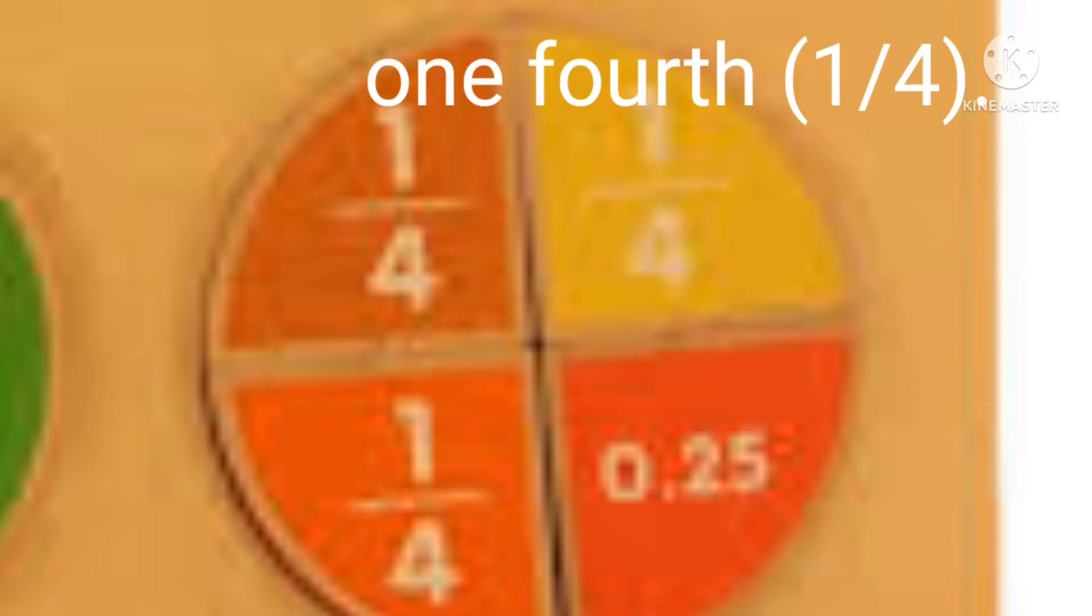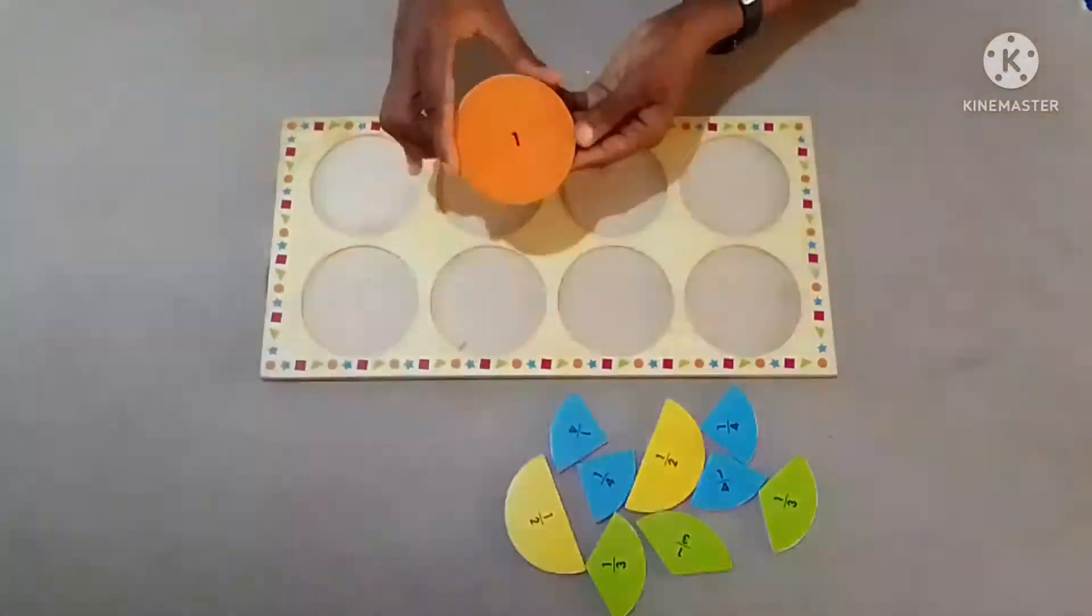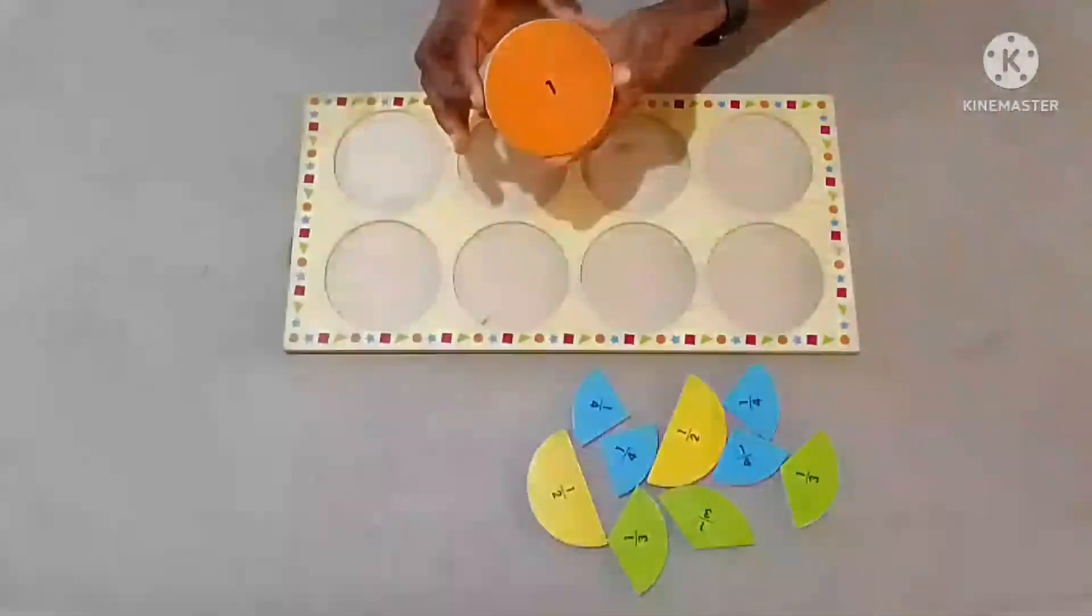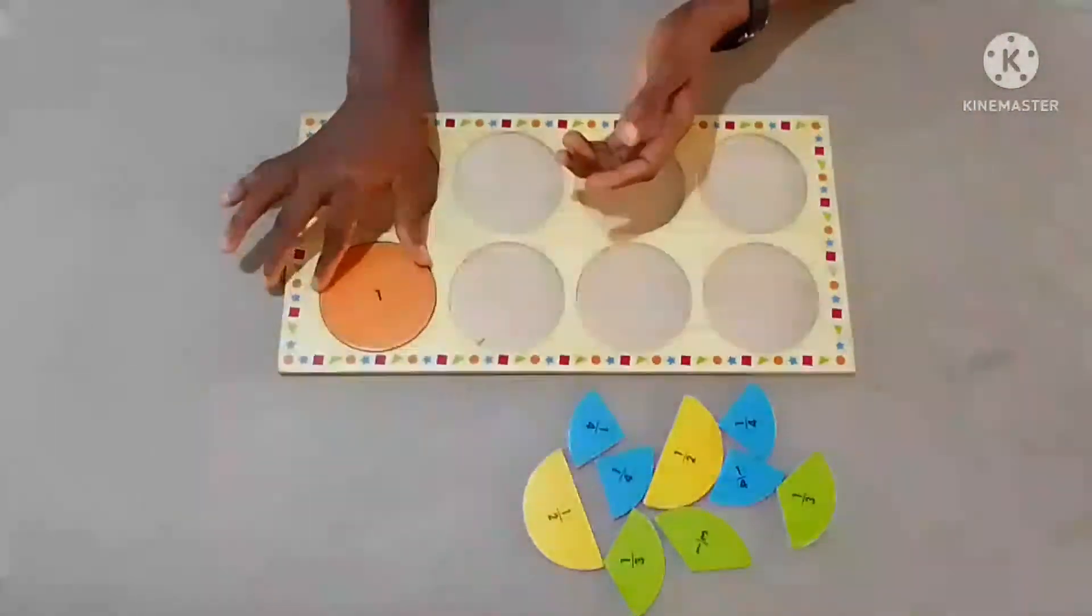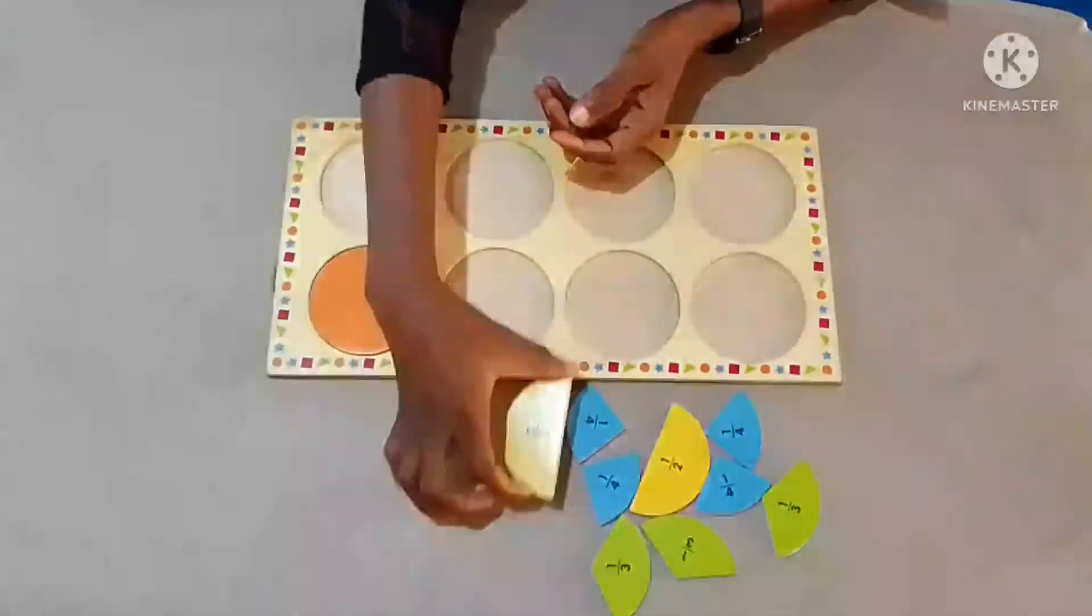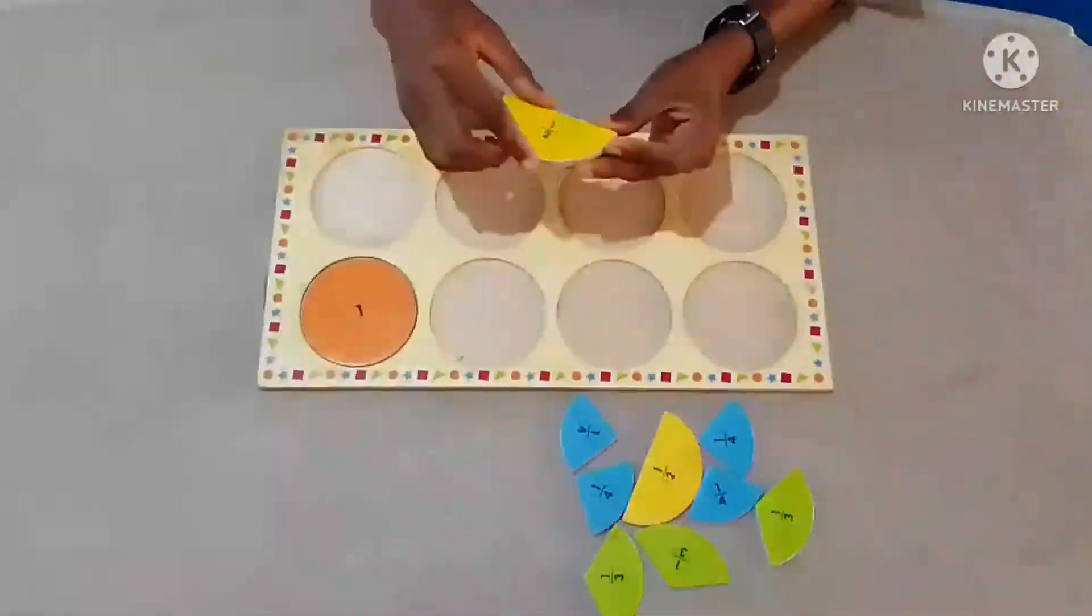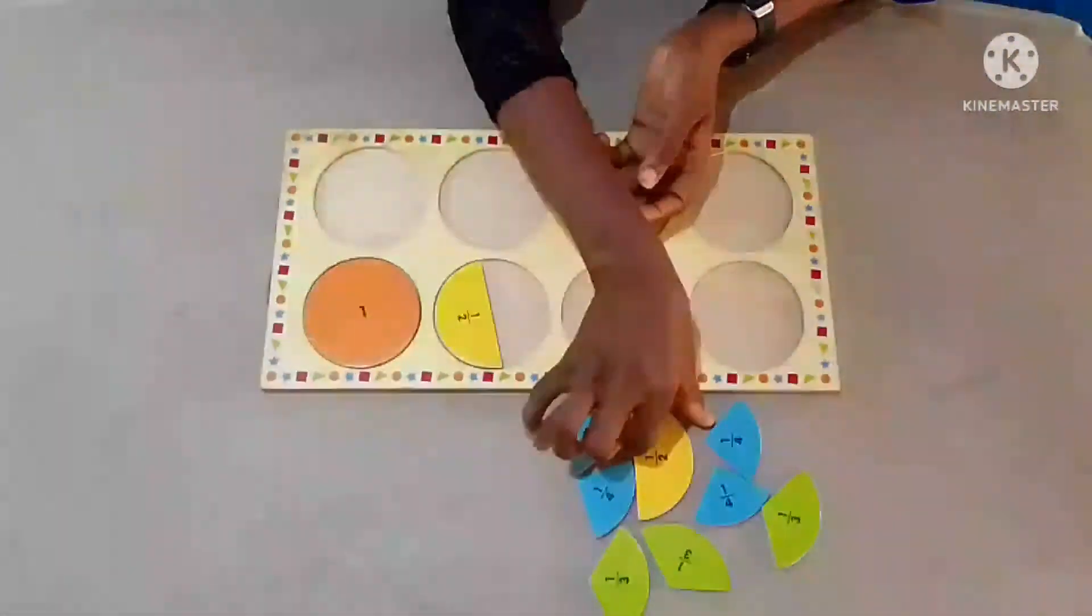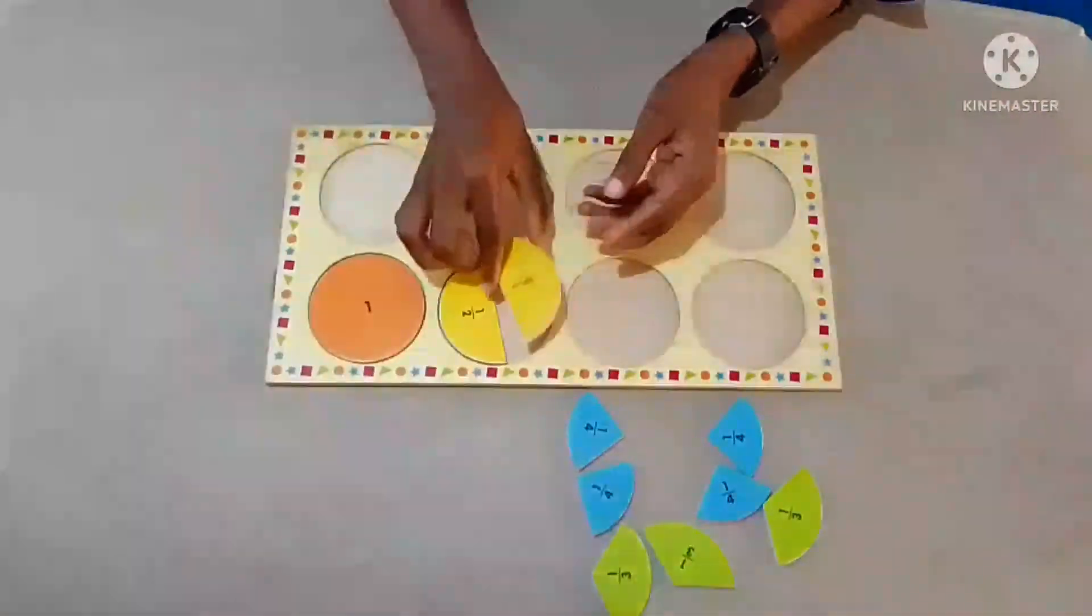So let's learn how to arrange our fractions. This is the whole. Pick it up and place it there. Now we look for the halves. This is the halves. You look for the halves. Now add it to it.